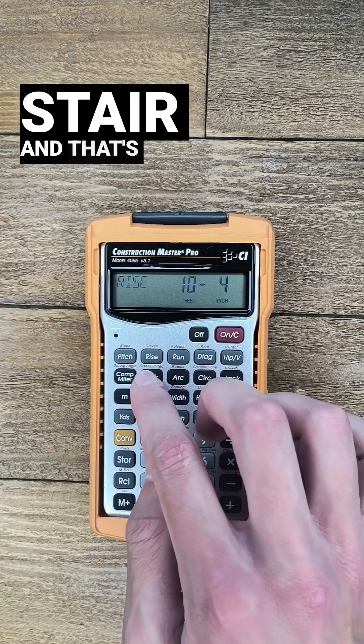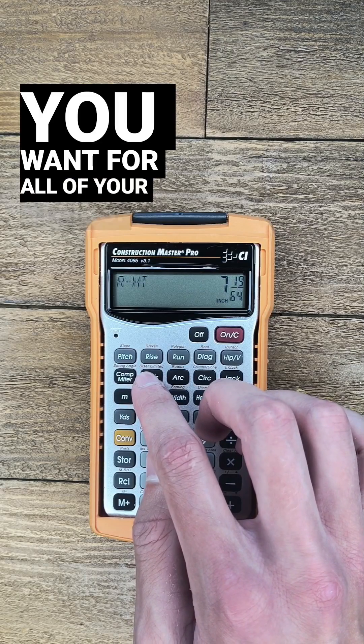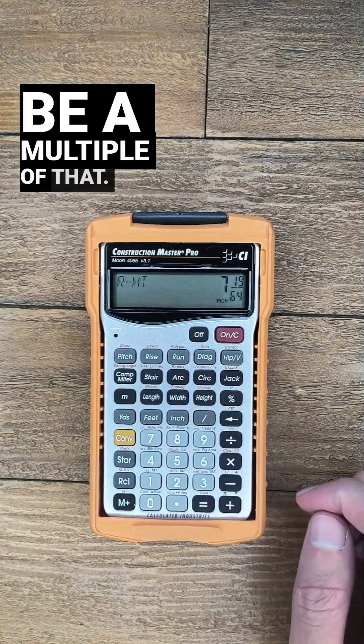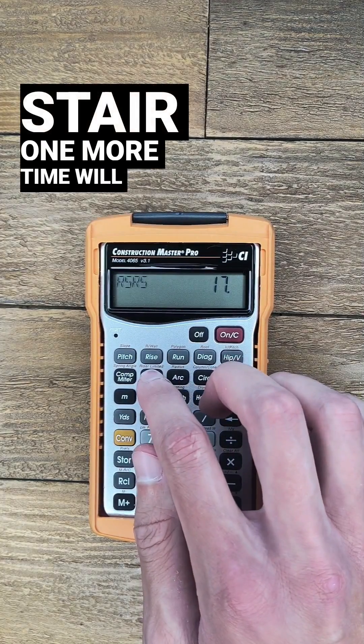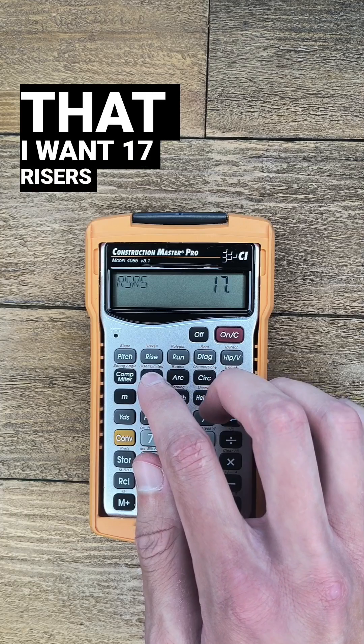Now push stair and that's the riser height you want for all of your stairs. So you'll want the landing height to be a multiple of that. And pushing stair one more time will show me that I want 17 risers in total.